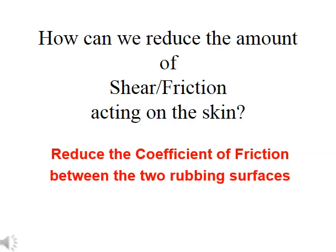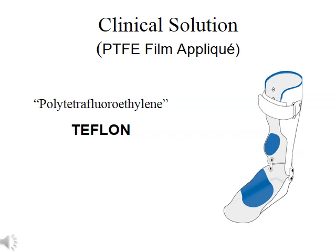How can we reduce the amount of shear friction acting on the skin? We can reduce the coefficient of friction between the two rubbing surfaces. The clinical solution, developed by Marty Carlson and colleagues at Tamarac, is the use of polytetrafluoroethylene, or PTFE, more commonly known as Teflon. Shear band, as the clinical product is called, is an applique — a film of PTFE bonded to a stretch fabric with an adhesive backing that can be applied to the inside or, as in this AFO example, to the proximal edge or trim line of the device. By applying shear band at the point of highest tissue shear concentrations, we can spot reduce the coefficient of friction occurring between the skin and the device in at-risk locations.